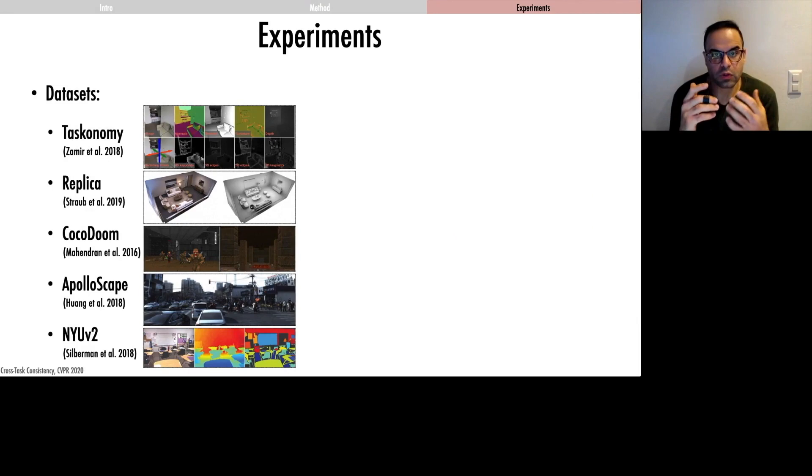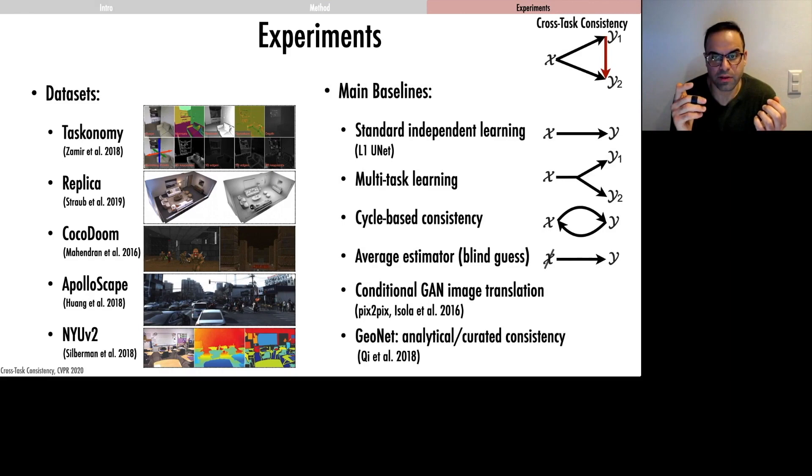We compare against standard independent learning, which is the main baseline, multitask learning, which predicts multiple tasks out of one image using a shared encoder, cycle, which is a special case of enforcing consistency between two domains assuming bijection.